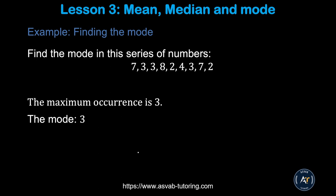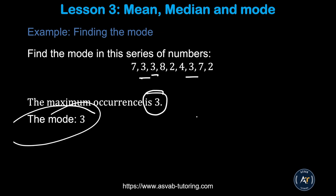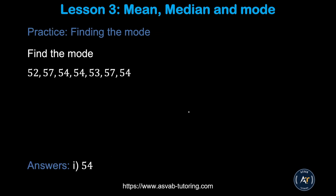The next thing is finding the Mode. Mode is the number that occurs the most frequently. You look at which number appears the most. It seems like 3 appears the most, so 3 is the mode here. Make sure you know the concept — sometimes they ask this type of question in the officer candidate test. Try the practice problem by yourself; the answer is 54.